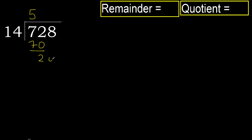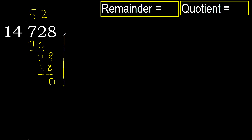Next: bring down 8, giving 28. 14 multiplied by 2 is 28, which is not greater. Ok, subtract. That leaves no remainder, therefore finish.